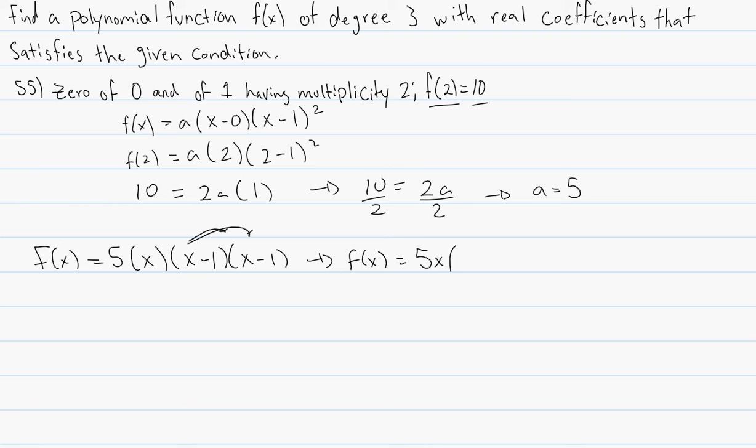So we've got 5x, x times x is x squared, x times negative 1 is negative x, negative 1 times x is negative x again, and then negative 1 times negative 1 is positive 1.